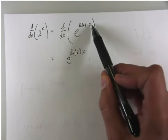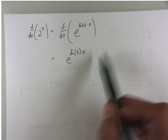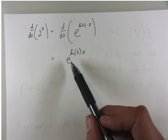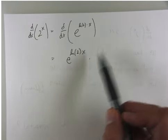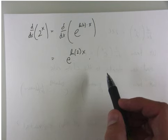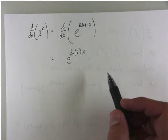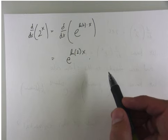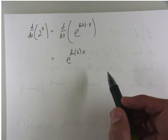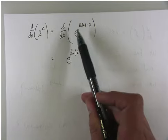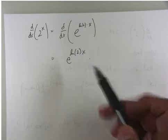The derivative of e to the something is e to the something times the derivative of that something — I'm using the chain rule here. So: the derivative of 2x is 2, the derivative of 3x is 3, the derivative of pi times x is pi — pi is just a number, just like 3 and 2. The derivative of root 2 times x is root 2 — also just a number. Natural log of 2 is just a number, so it should just be natural log of 2.